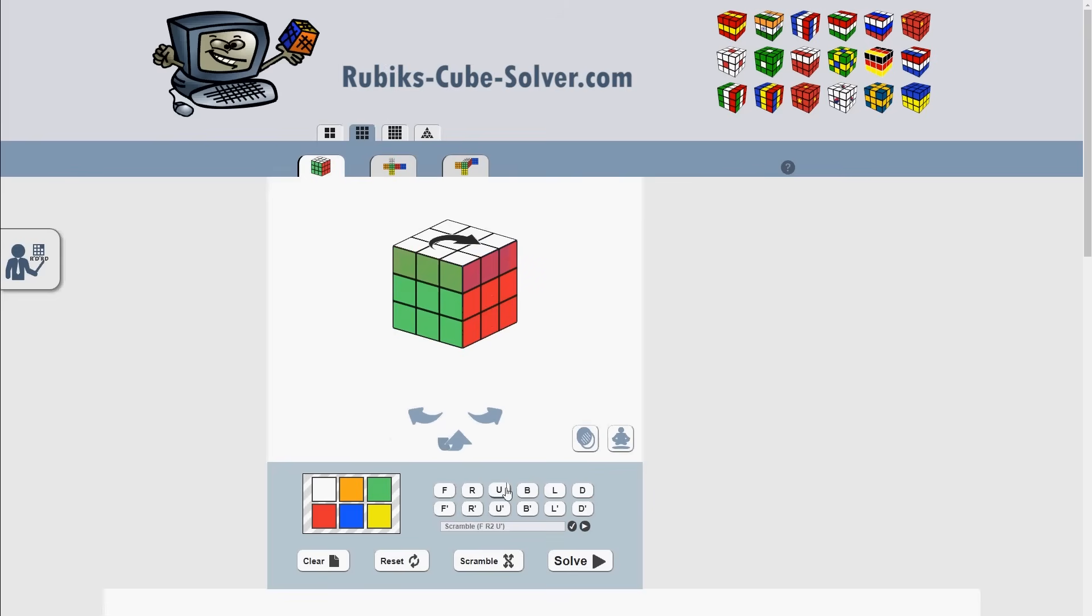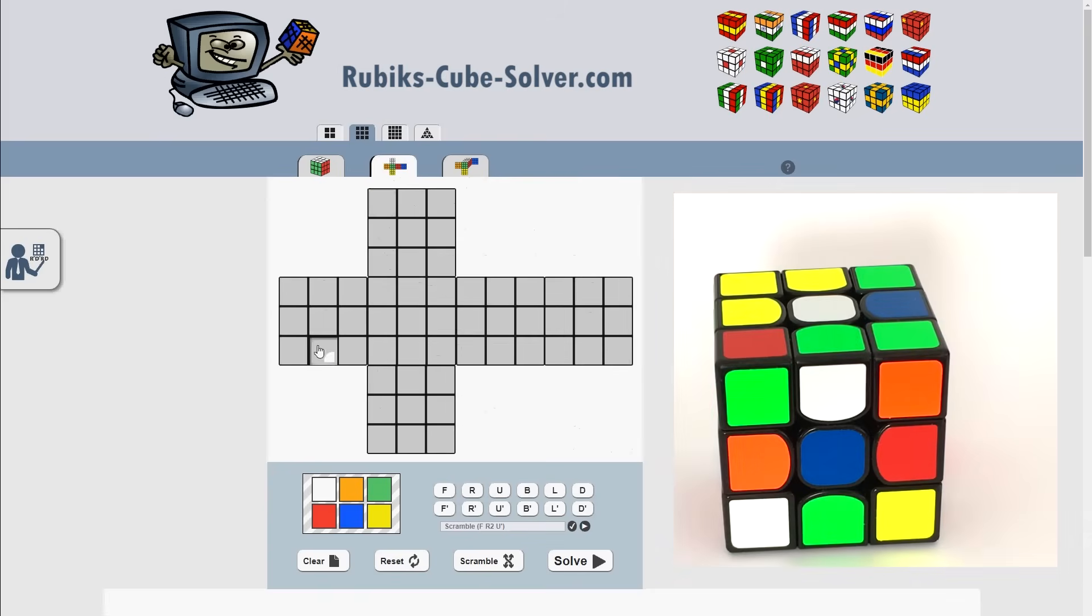Apply face rotations with the rotation buttons or generate a random scramble. Reset the puzzle to the solved state or clear all colors to start with blank fields. To configure my scrambled cube, I prefer to use this unfolded view.